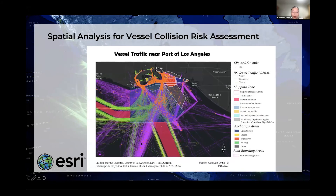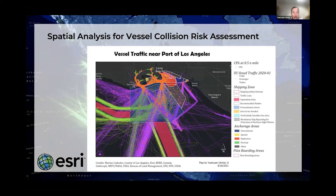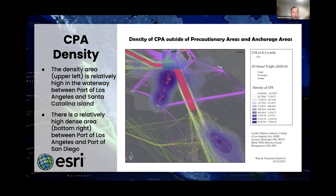It is not that high risk within the port, because within the port — especially in the precautionary area — ships may have lower speed and are under the monitoring of the port. But outside of the port area, those CPA points may need more attention, because in those areas the speed of ships might be higher, presenting a greater collision risk.